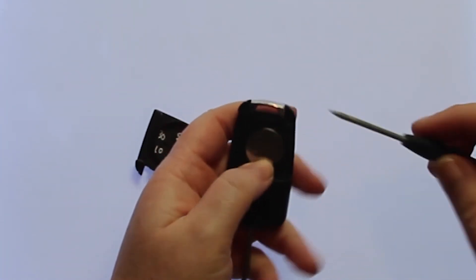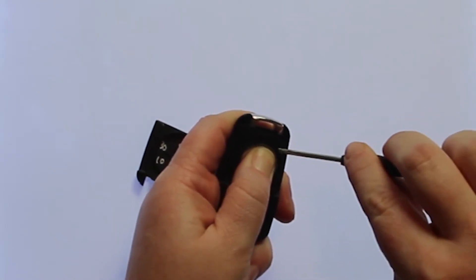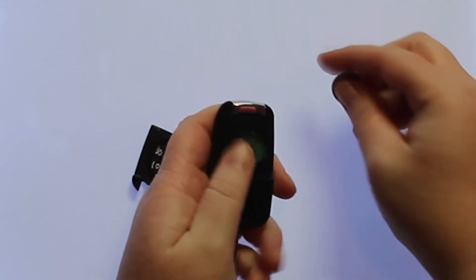Once you have the backside off, you may want to use a small screwdriver to push down on the battery and help pry it out.